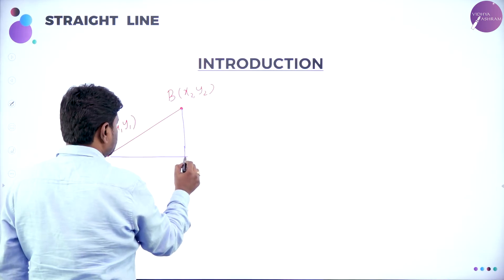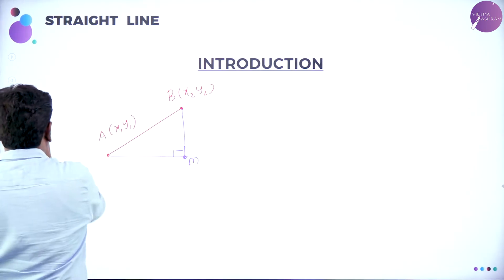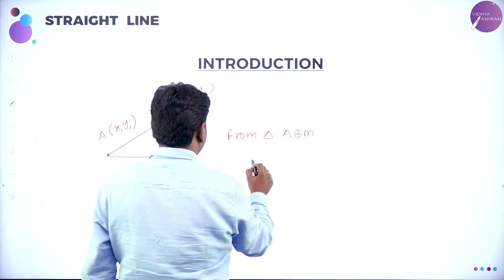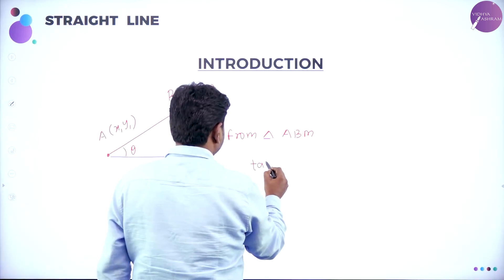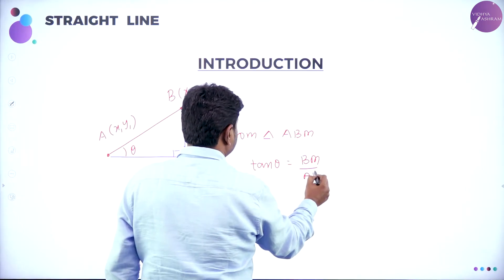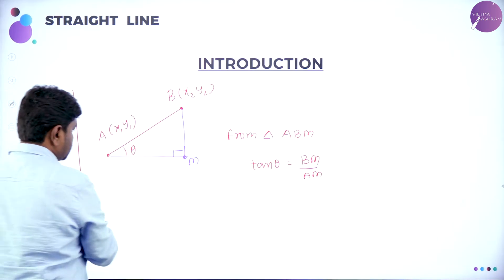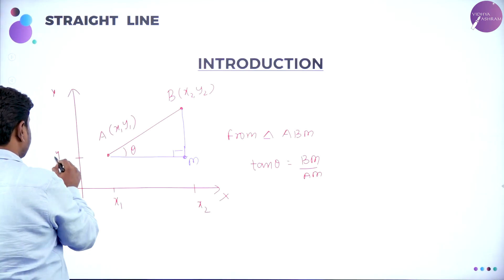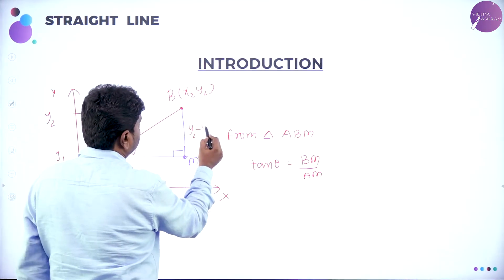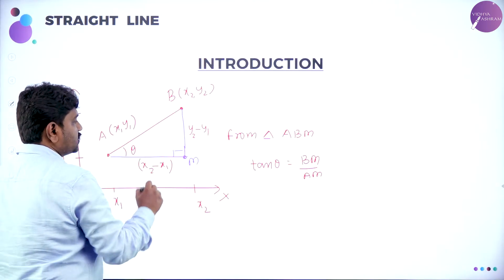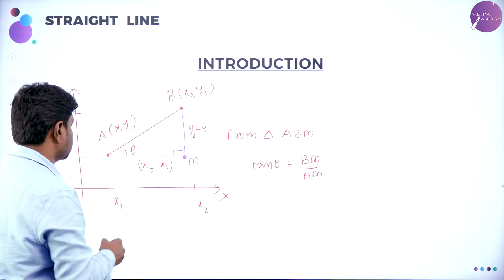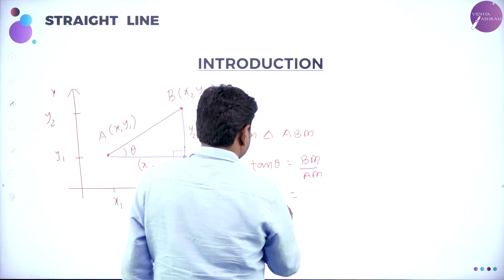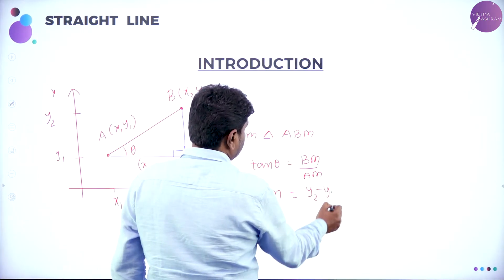From triangle ABM, if you take this is theta, what is tan theta? Tan theta is opposite side by adjacent — BM divided by AM. Here, if you draw X-axis and Y-axis, this length is X1, this length is X2, this length is Y1, and this length is Y2. BM is Y2 minus Y1 and AM is X2 minus X1. So slope is tangent of angle made by the line with X-axis, and tan theta equals BM by AM, which is Y2 minus Y1 over X2 minus X1.